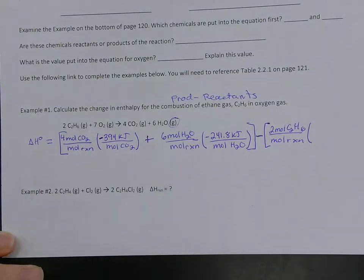So we've got two moles of C2H6 per mole reaction times its value from the table, C2H6. There should be negative 84.7 from your table, kilojoules per mole of C2H6.